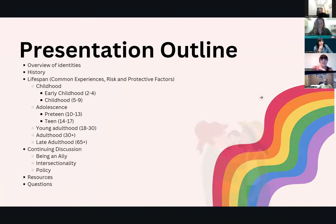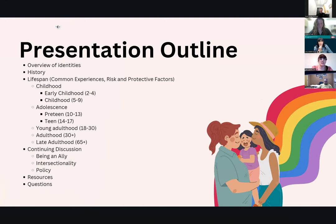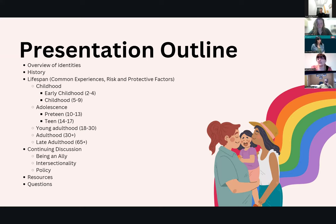Our presentation outline gives a roadmap for what we're going to cover today. We'll start with an overview of identities and history — we'll spend a relatively short amount of time on those. Then we really want to focus on the lifespan: common experiences you may see at certain age ranges and risk and protective factors for those individuals, mental health in the community. We also have a continuing discussion and quite a bit of resources at the end.